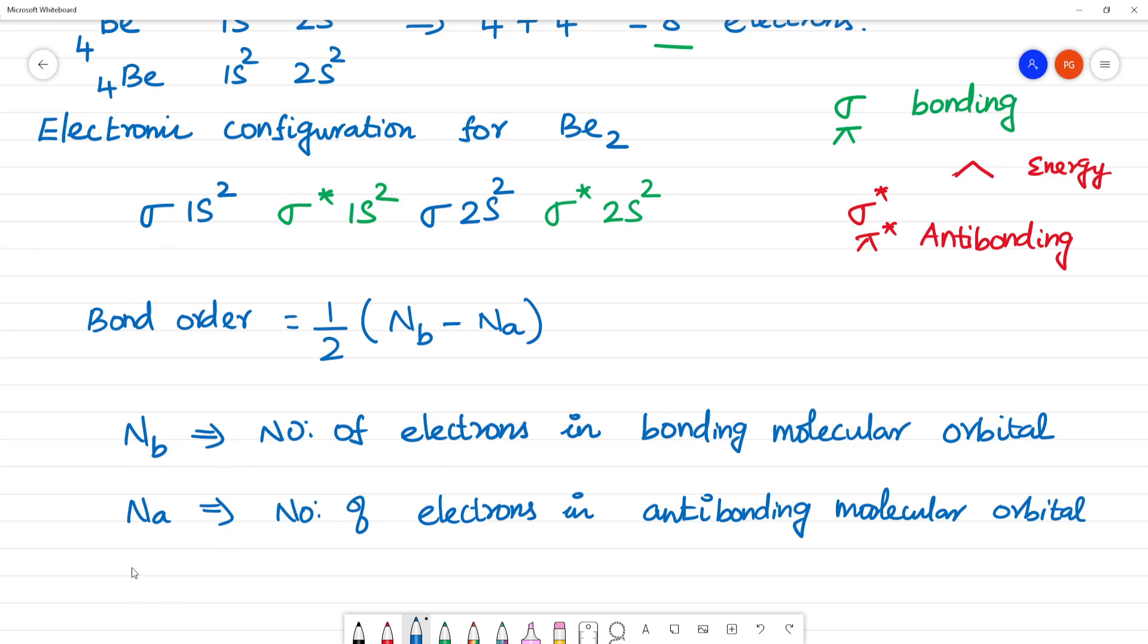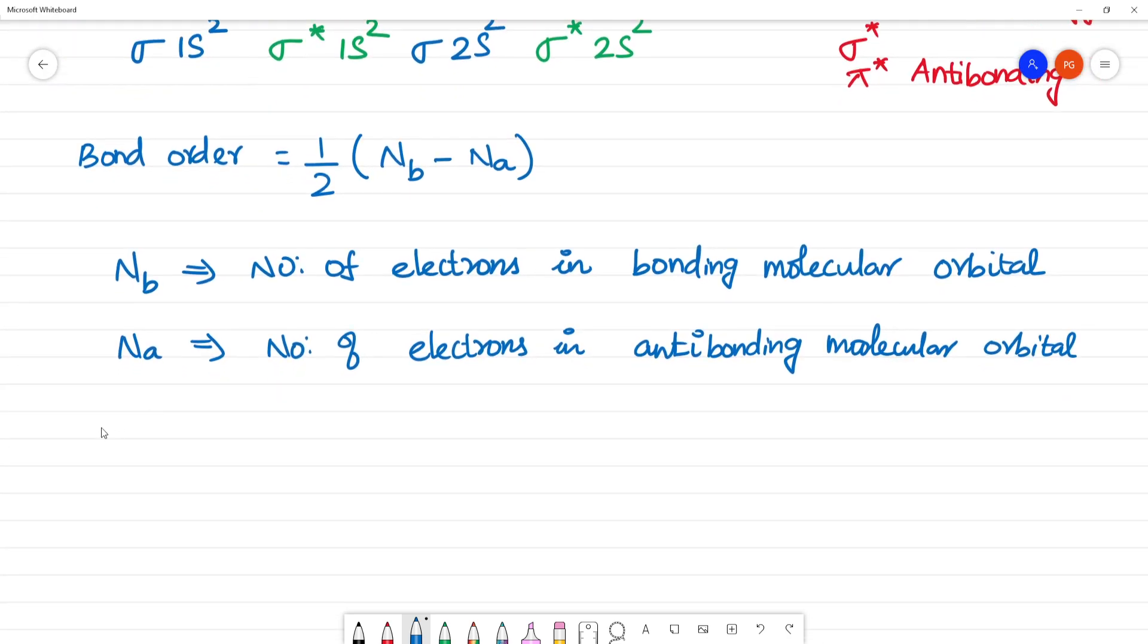Bond order: if the bond order is positive, it is a stable molecule. That means it will exist. If the answer is zero or negative, it is unstable. So it does not exist. Zero or negative, does not exist. Positive, it will exist.